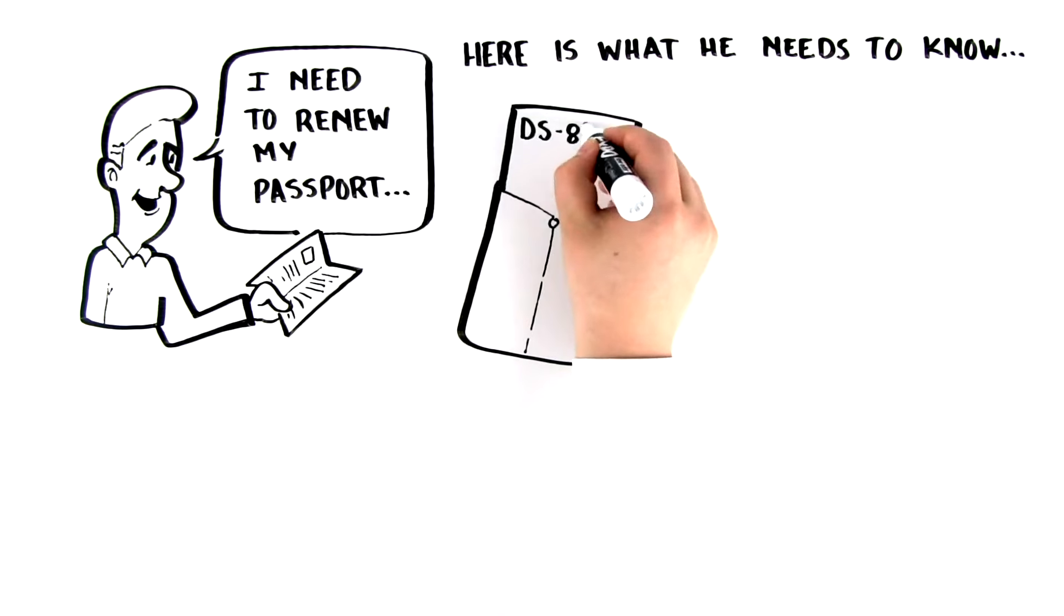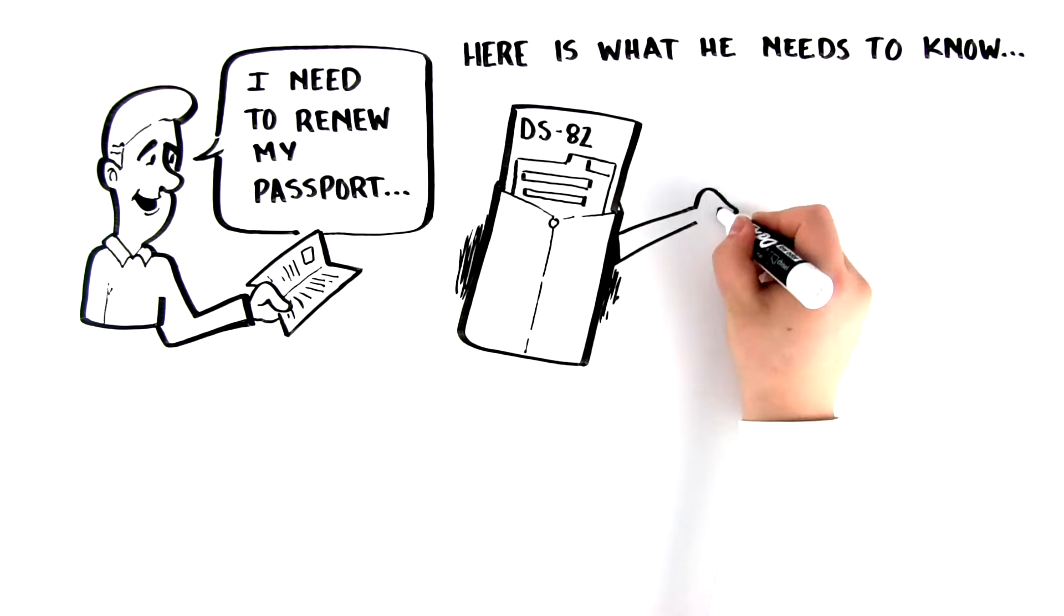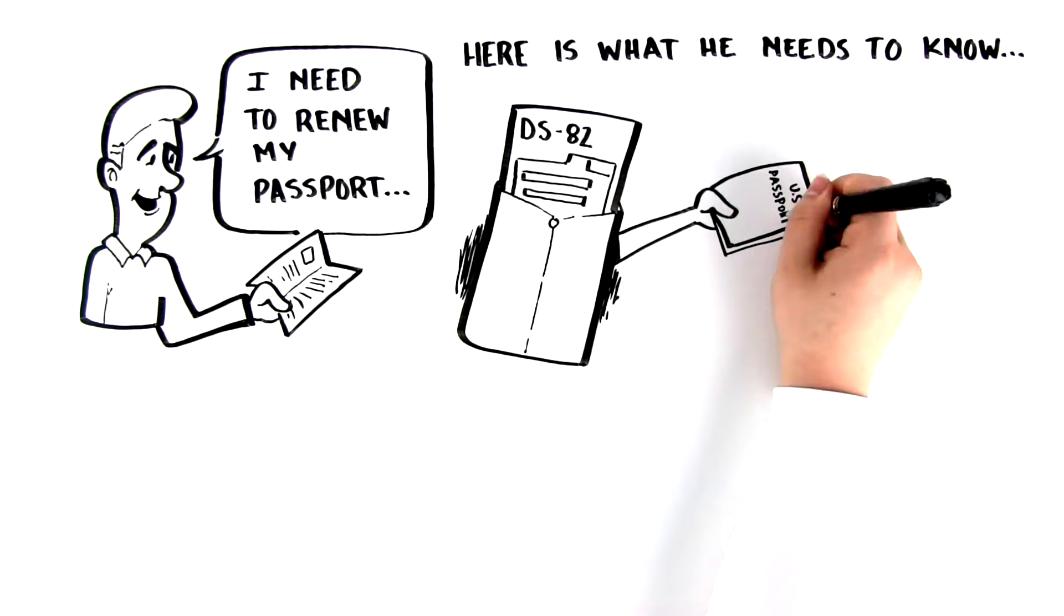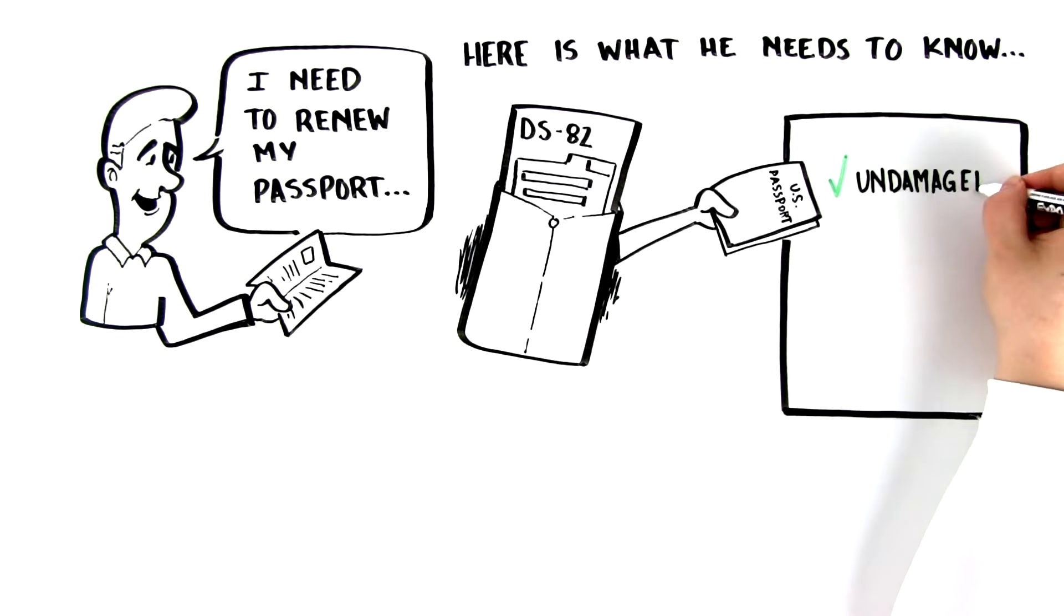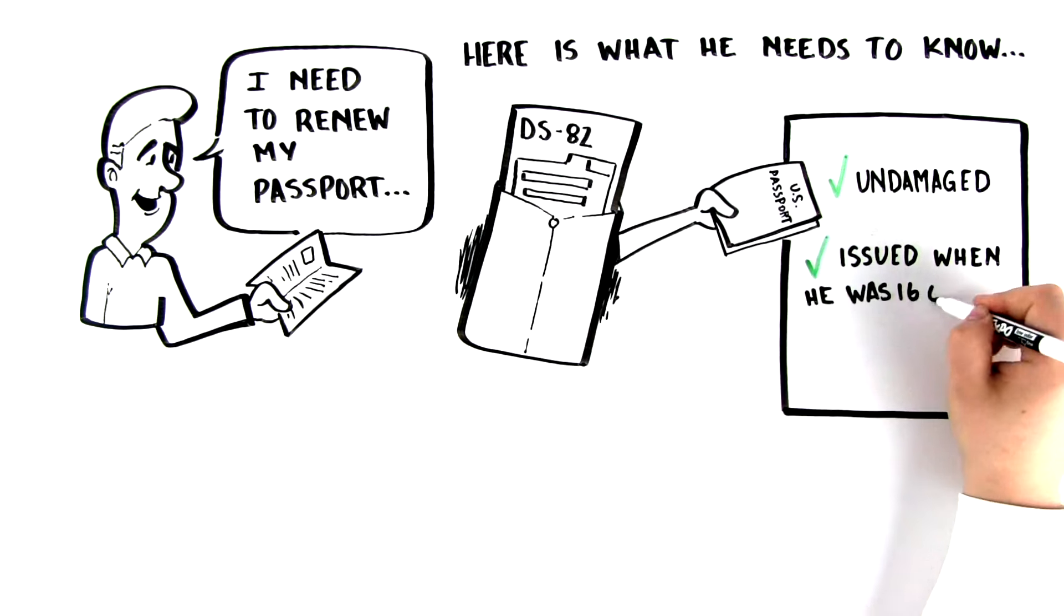He can renew by mail using form DS-82 if he is able to submit his most recent passport, it is undamaged, it was issued when he was 16 or older, and was issued within the last 15 years.